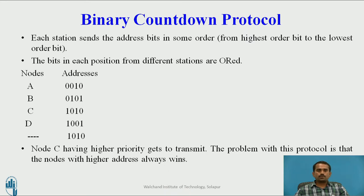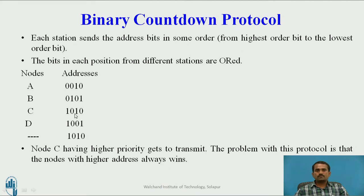Binary countdown protocol. Each station sends its address bits in order from the highest-order bit to the lowest-order bit. We perform an OR operation on the bits at each position from different stations. For example, there are 4 nodes: A, B, C, D with addresses — A is 0010, B is 0101, C is 1010, D is 1001. Out of these addresses, we check which one has the highest priority. Node C has the highest priority with address 1010, so it transmits first, then we move to the next highest priority and follow the same procedure.